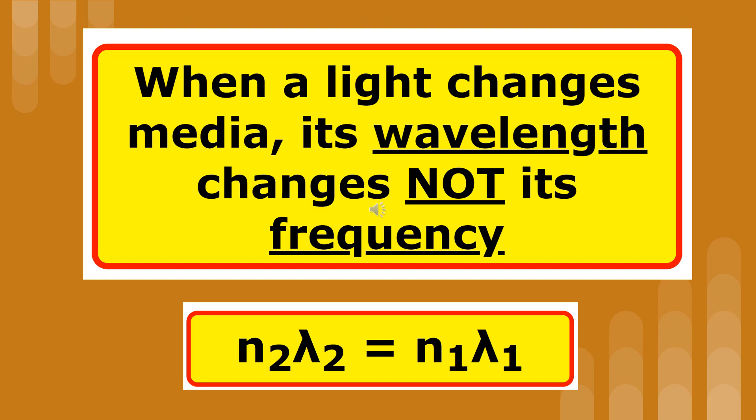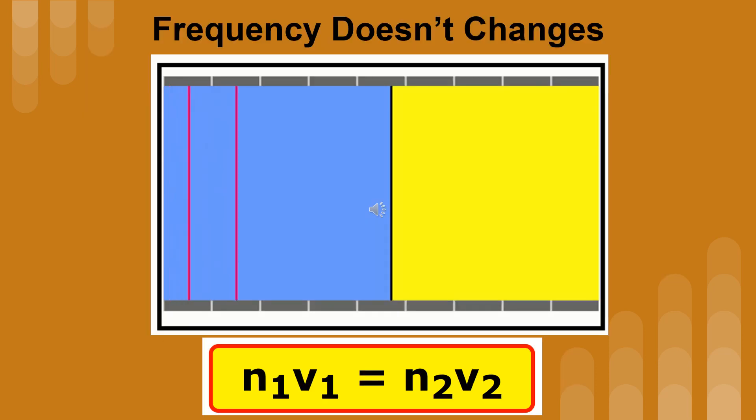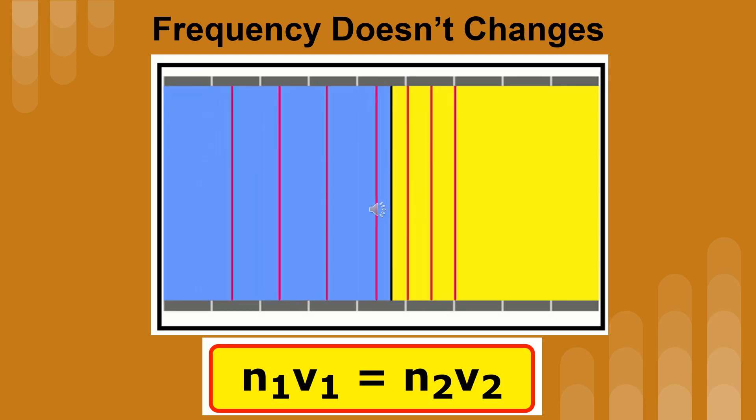When a light ray changes from one medium to another, its wavelength changes, but its frequency doesn't. Here is the equation that relates the index of refraction with wavelength. The 1 designates the starting medium, and 2 represents the second medium. Light slows down when it leaves the blue medium and enters the yellow one. Since the speed decreases, the wavelength decreases, too.